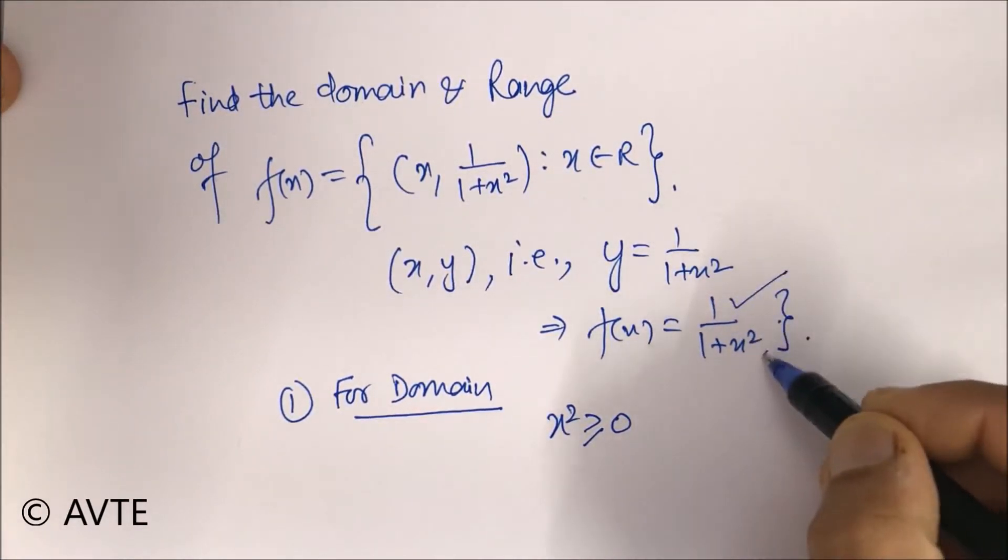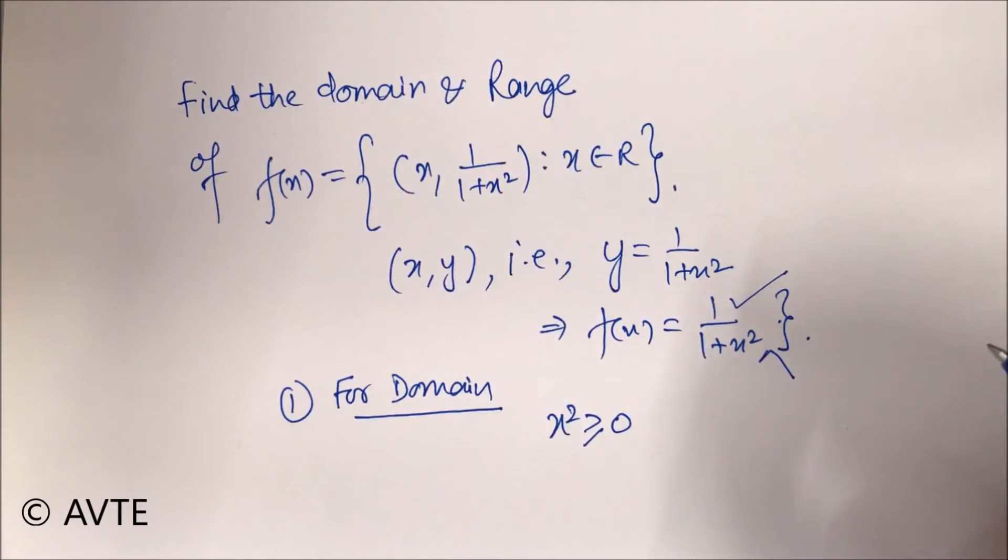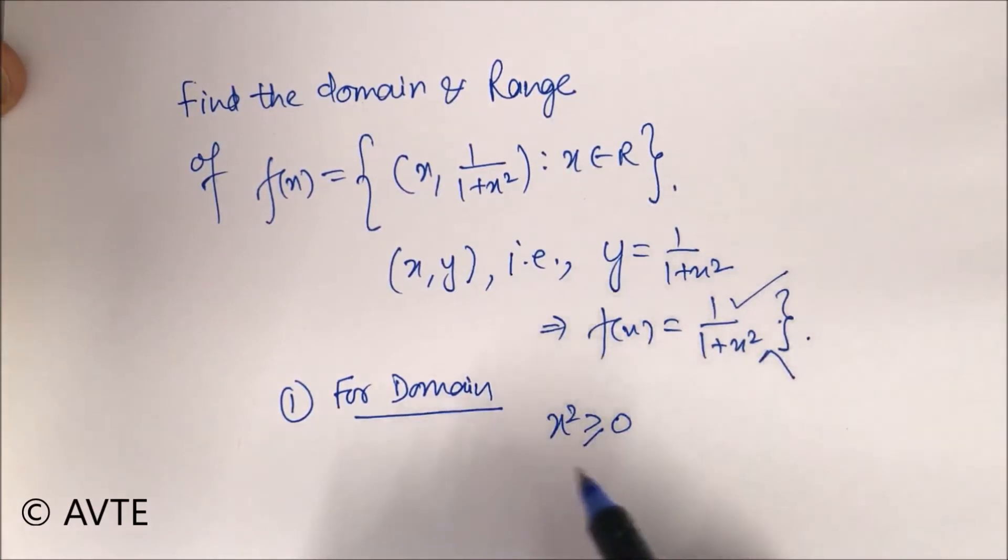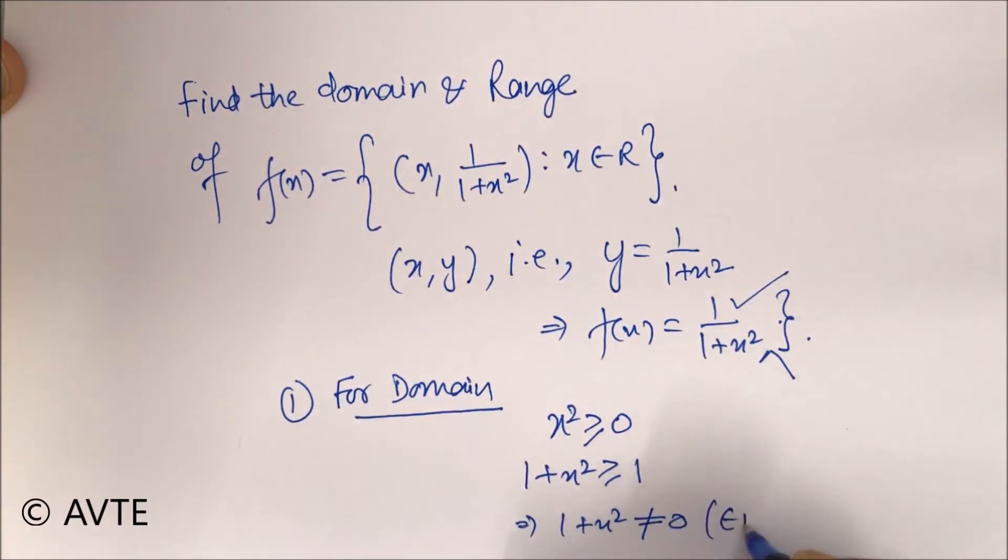We have constant in the numerator and a polynomial in the denominator. So it's a rational expression, x squared is greater than equal to 0. But if we add 1 on both the sides, you can see that 1 plus x square is never equal to 0 because it is always a positive quantity greater than equal to 1.